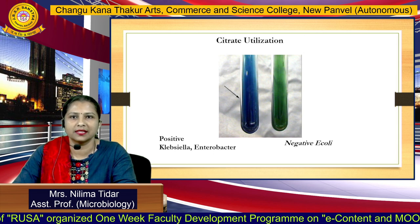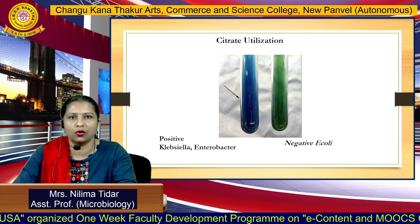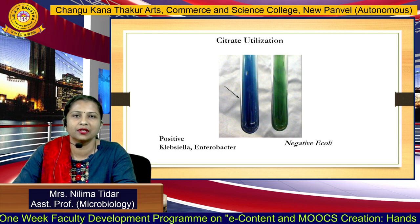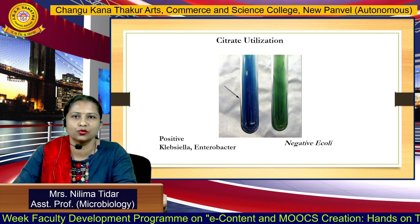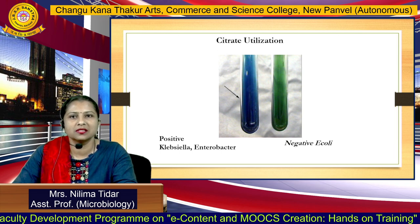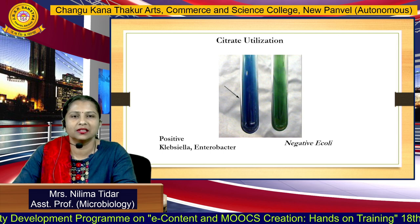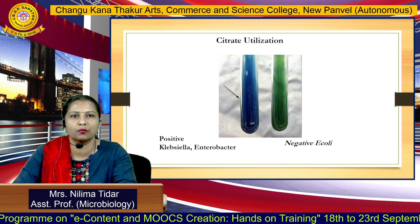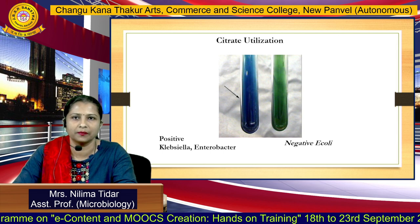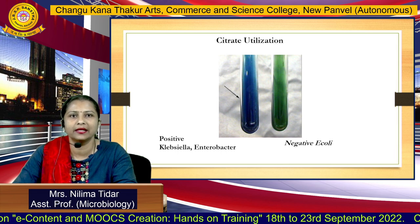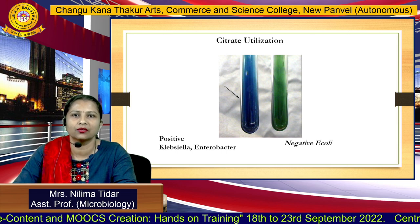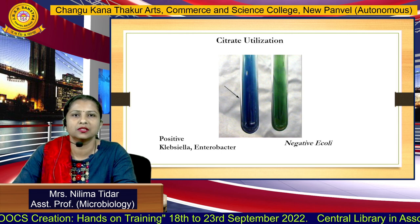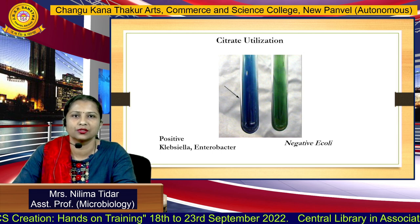These four tests — Indole, Methyl Red, Voges-Proskauer, and Citrate — are collectively given the common heading IMVIC. These tests are generally performed for all members belonging to the Enterobacteriaceae family, and when we want to discriminate or identify organisms belonging to this family, we particularly perform these four tests in combination.